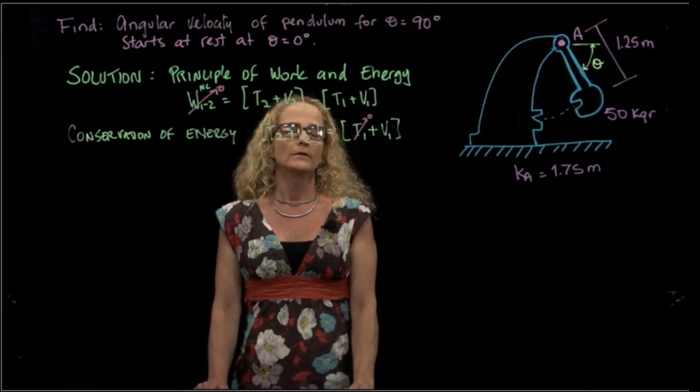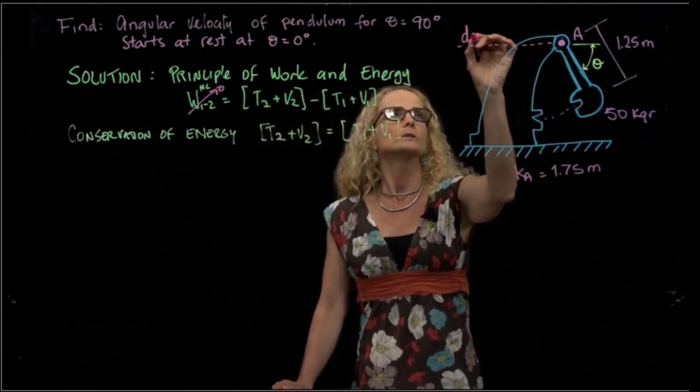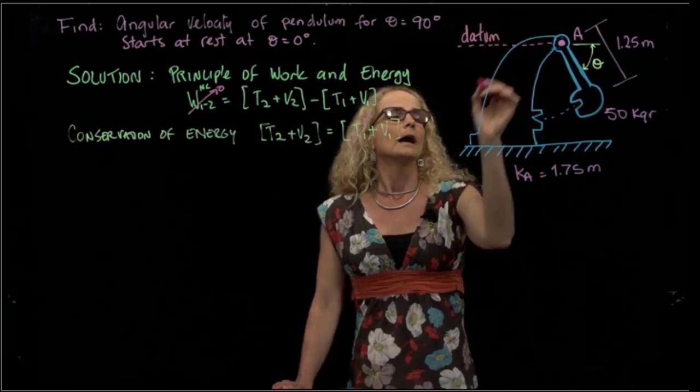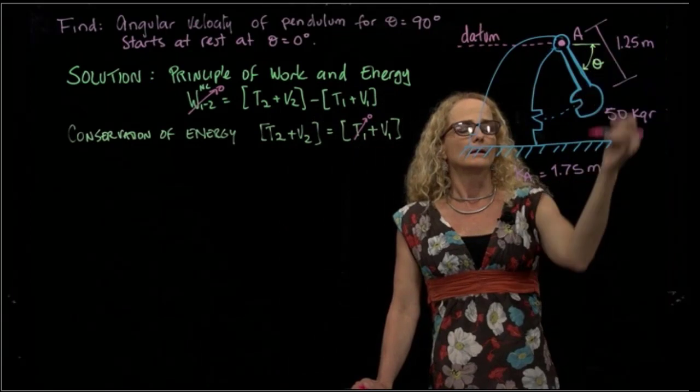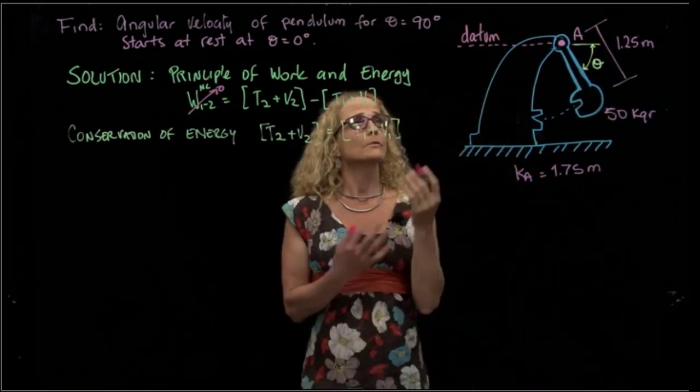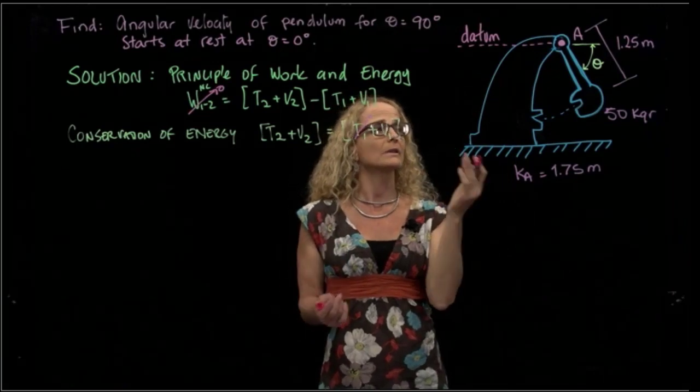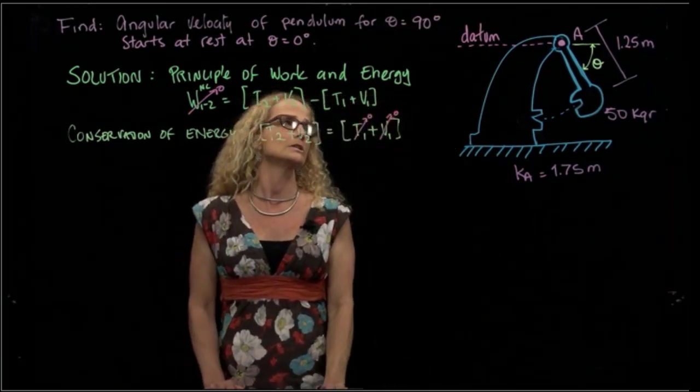And then we will have to calculate the potential energy in the initial position and in the final position and the kinetic energy in the final position. So we put a datum here to calculate our potential energy. The pendulum starts in the horizontal position, that's our first position. If we put our reference there, our datum, we can say that the potential energy is equal to zero.